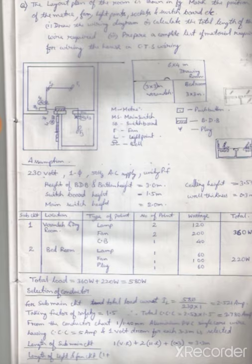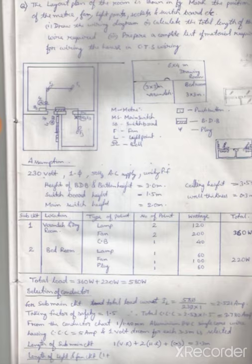Here we have taken some symbols, those are the standard symbols of electrical equipment. The first one is the meter, the energy meter which will be used for building purposes. There is a main switch (M.S.), switchboard, fan (F), light points, calling bell, push button switch (BDB), and plug.